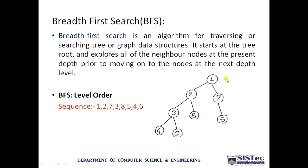Starting from level 0, there is one node: 1. We visit it and then explore it, getting nodes 2 and 7. Level 0 is complete, so we move to level 1, which has nodes 2 and 7. We explore 2 first, getting 3 and 8, then explore 7, getting 5. Level 1 is now complete, so we move to level 2, which has nodes 3, 8, and 5.